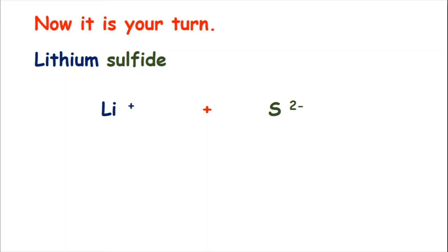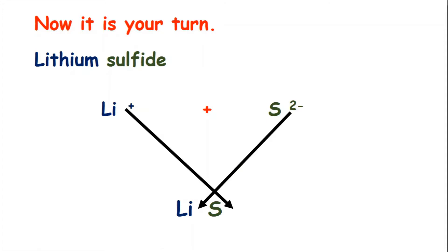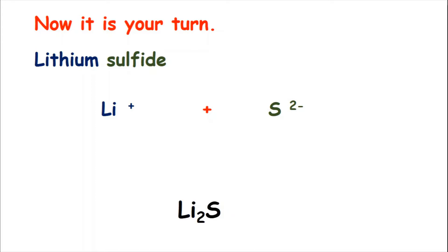So again, we leave some space and put Li and S next to each other, leaving some space in between. We draw one arrow from the Li+ down next to the S. The 2 from S2- moves down next to the Li. There is no number in Li+, so we don't have to write any number next to the S. And the formula for lithium sulfide is Li2S.